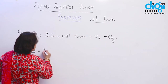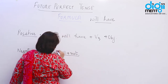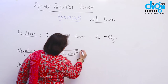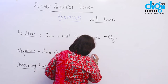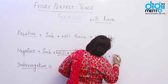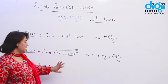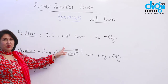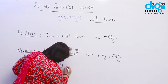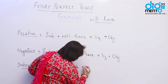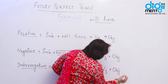For negative, the structure is: Subject + will not (won't) + have + third form of the verb + object. For interrogative, we move 'will' before the subject: Will + subject + have + third form of the verb + object.